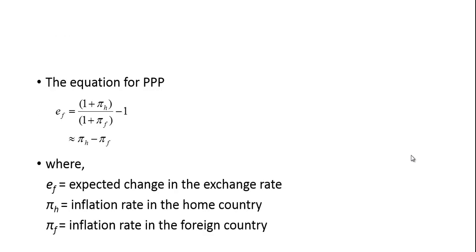Relative purchasing power parity says the rate of change in prices should be similar when measured in a common currency. The equation for relative purchasing power parity is that the expected change in the exchange rate E of F equals one plus the inflation rate in the home country divided by one plus the inflation rate in the foreign country, minus one.